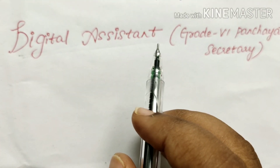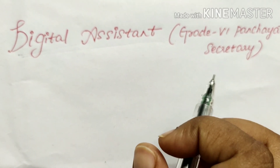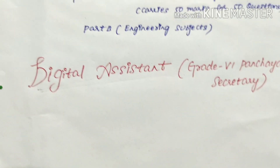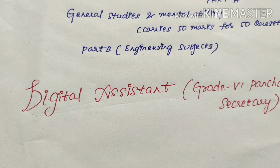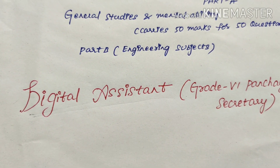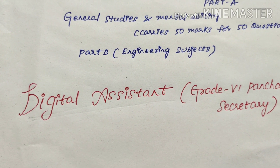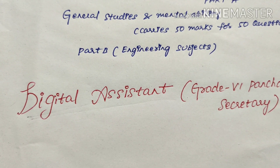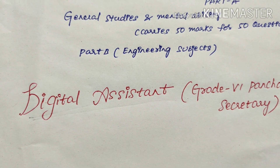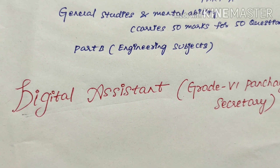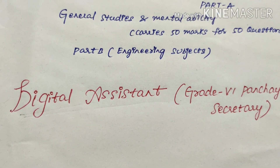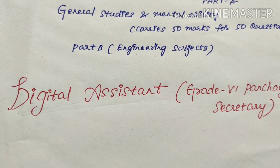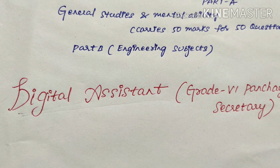Firstly, I would like to explain the parts given in the Digital Assistant examination: Part A and Part B. Part A is all about General Studies and Mental Ability, which carries 50 questions and 50 marks. Part B is about engineering subjects — for computer science students, electronics students, electrical students, MCA students, and MBA students — every student can attempt Part B questions very easily because it has a basic component of computer knowledge.